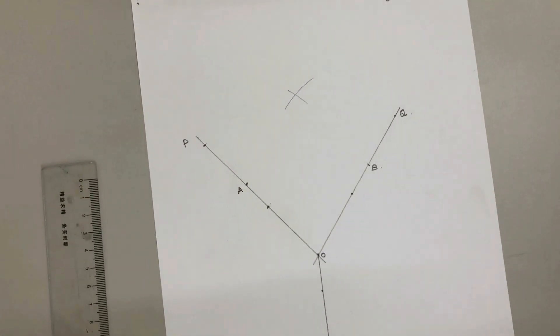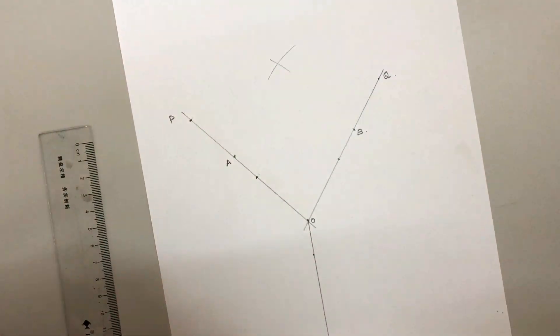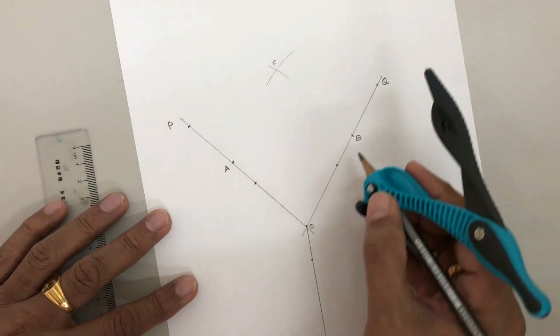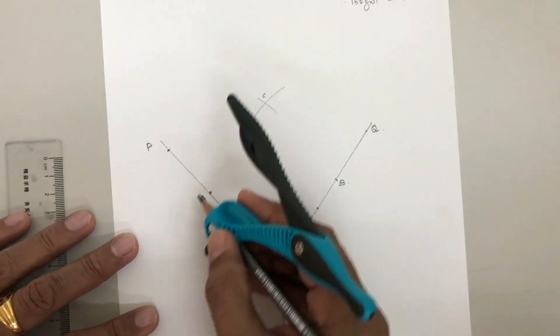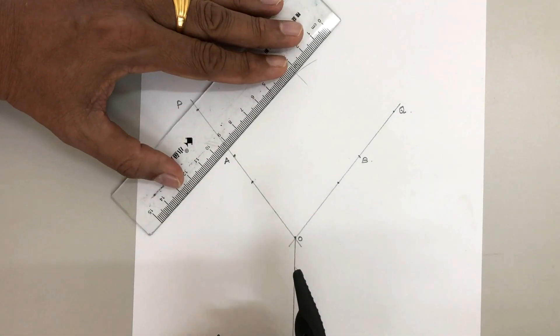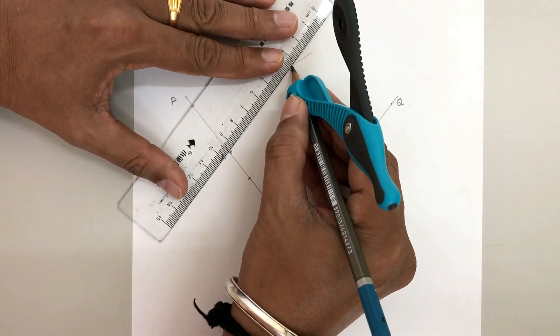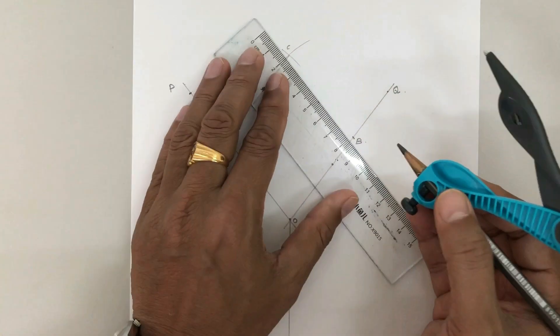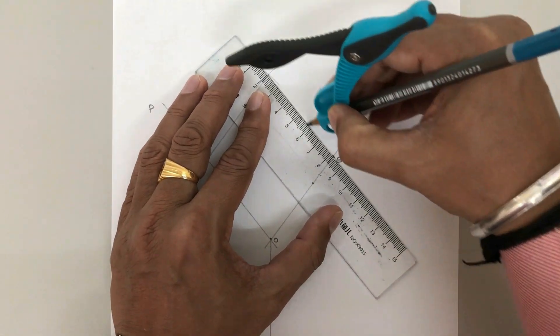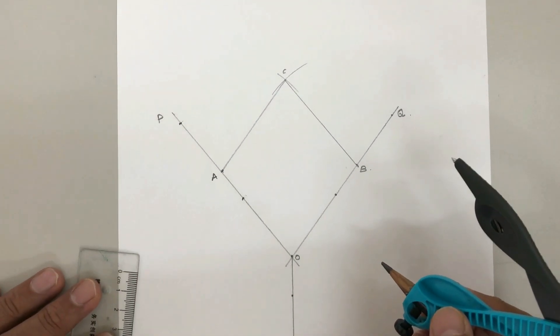Now we have to complete the parallelogram. We can write this point as point C, so we will have a parallelogram OBCA. So we can complete the parallelogram.